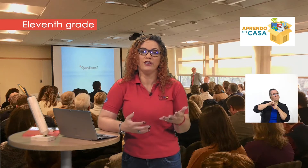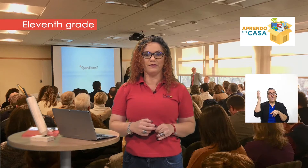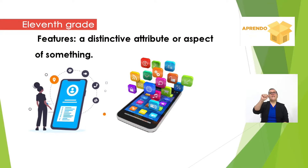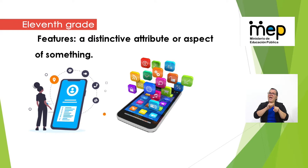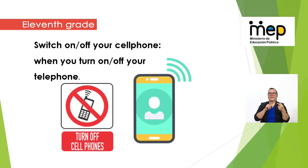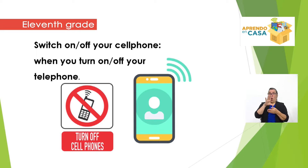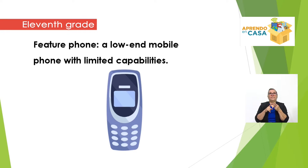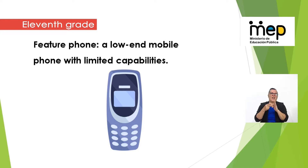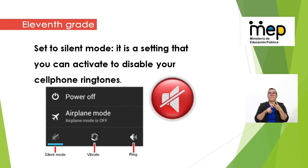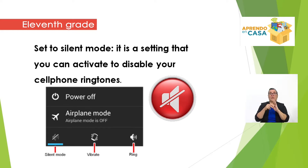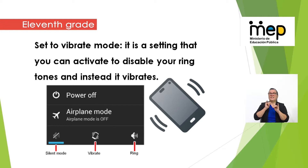Before watching, let's review some important keywords. Features — a distinctive attribute or aspect of something. Switch on or switch off your cell phone — when you turn on or turn off your telephone. Feature phone — a low-end mobile phone with limited capabilities, meaning it doesn't have too many features. Set to silent mode — a setting you can activate to disable your ringtones and set the phone to vibrate instead.